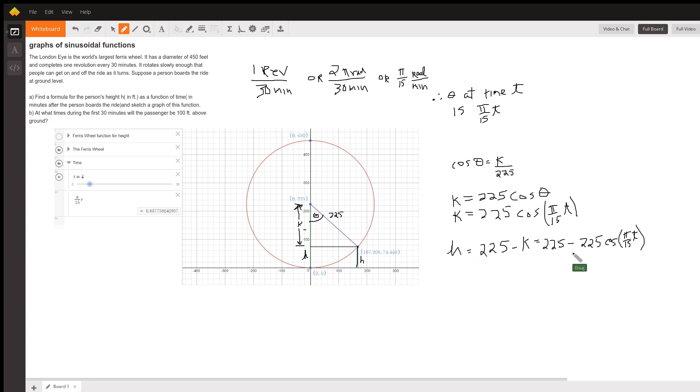So there's the value for k. And h is 225 take away k. So there's your formula right there: h(t) equals 225 minus 225 cosine of π/15t.